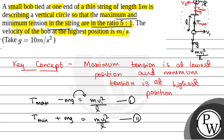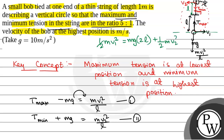Now we will do energy conservation at the lower point and higher point. At the lower point, if this is the datum, potential energy equals 0 and kinetic energy is half mv1². At the higher point, the height H equals 2L since the length of the string is L, so potential energy is mg times 2L plus half mv2². From here, v1² equals v2² plus 4gL.